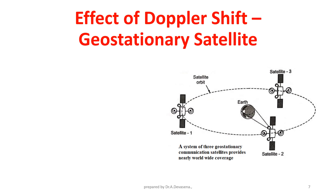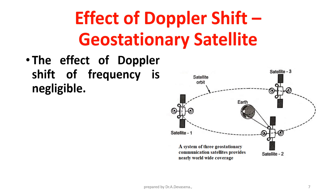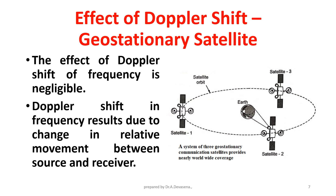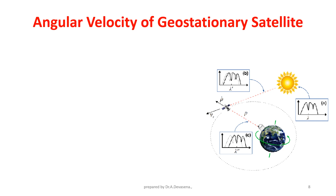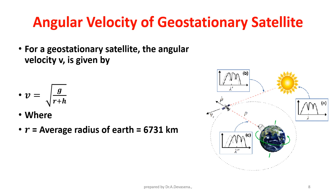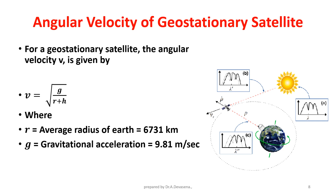The effect of Doppler shift of frequency is negligible. Doppler shift in frequency results due to change in relative movement between source and receiver. For a geostationary satellite, the angular velocity V is given by V = √(G / (R + H)), where R is the average radius of the Earth equal to 6,731 km, G is the gravitational acceleration equal to 9.81 m/s², and H is the height of the satellite above the ground.